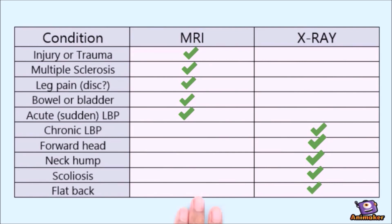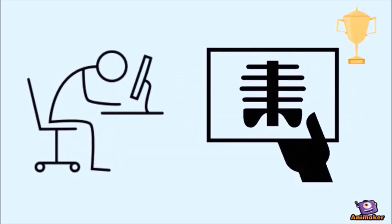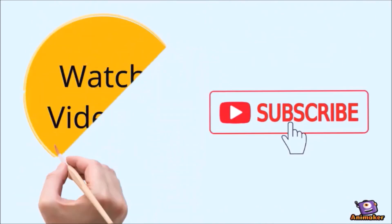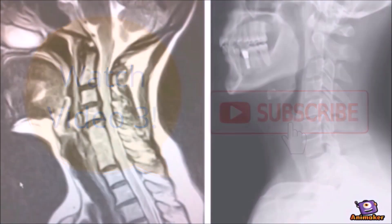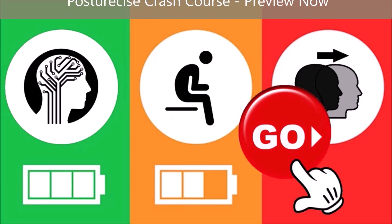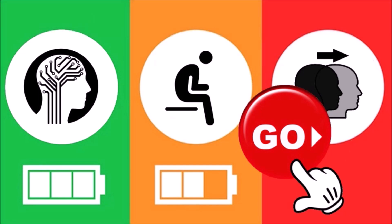I hope that gives you a better idea of which modality you need. It's pretty clear that if you need your posture and spinal alignment assessed, x-ray is the gold standard. Remember to check with your doctor or chiropractor if you're not sure. Make sure you're subscribed so you receive the third and final video in this three-part mini-series, where we'll look at some real examples of spinal x-rays and posture conditions. We'll see you next time.